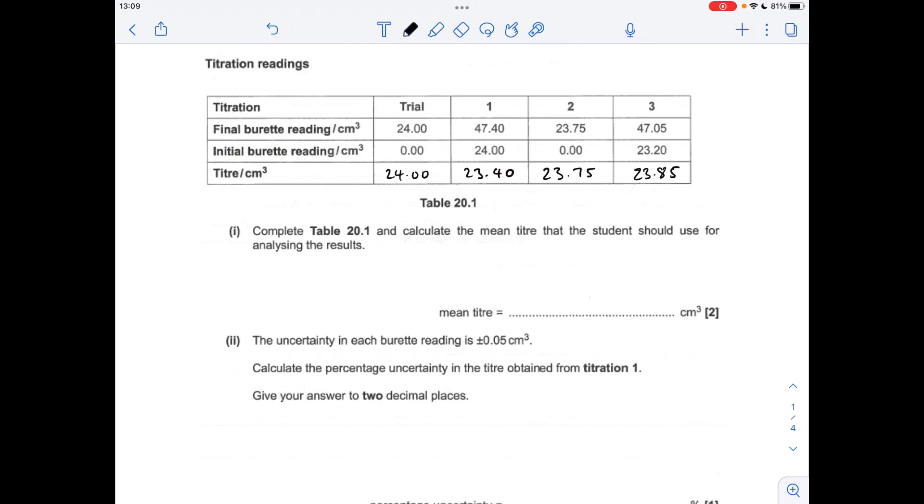In terms of the mean, remember that you never use the trial result, and we're looking for results within 0.1 cm³ of each other - we call those concordant results. So 2 and 3 are concordant, one's just a little bit too far out. We take the mean of the two concordant results and get 23.80.